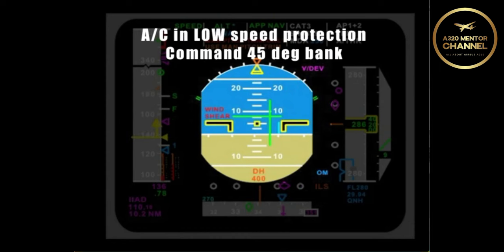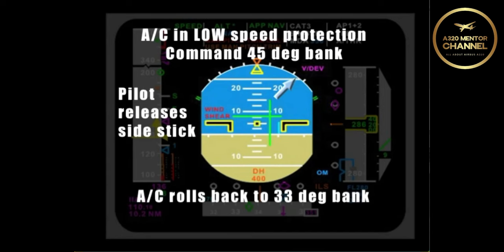What about low speed protection when you have commanded the same 45 degrees of bank and then let go of the stick? In low speed protection, it will just roll back to 33 degrees because in this case, it is not concerned about over-G-ing.